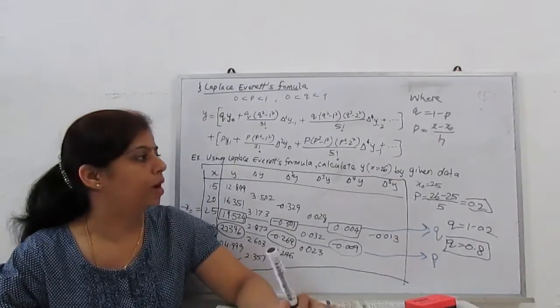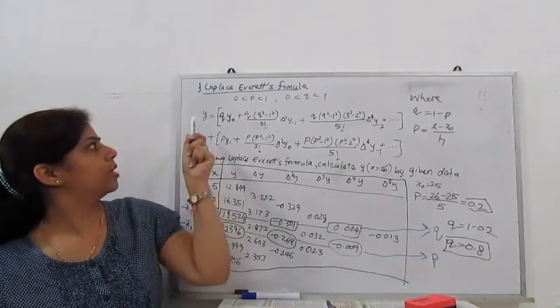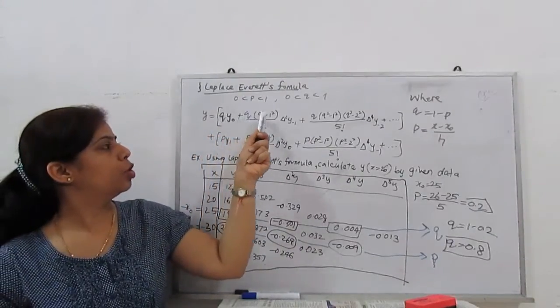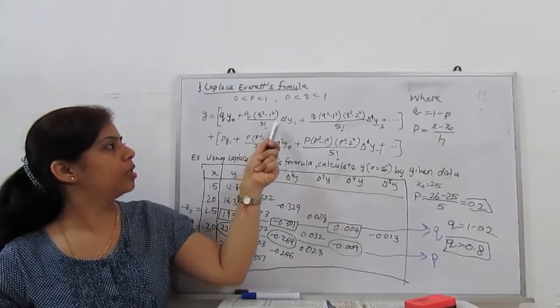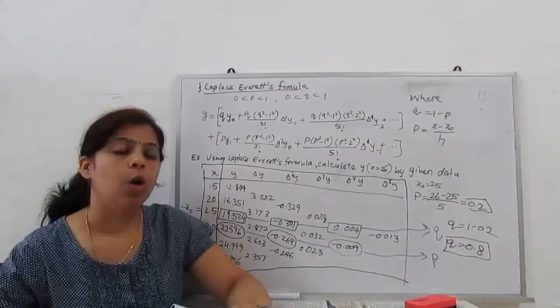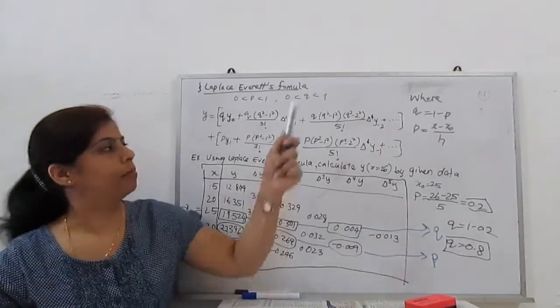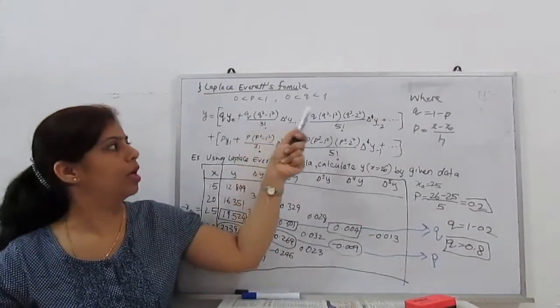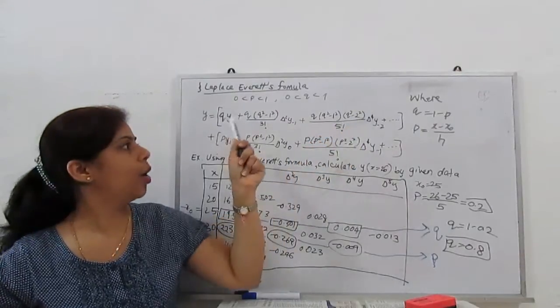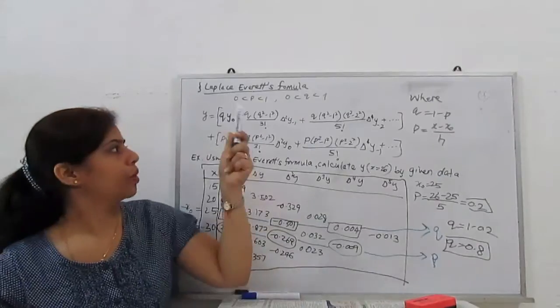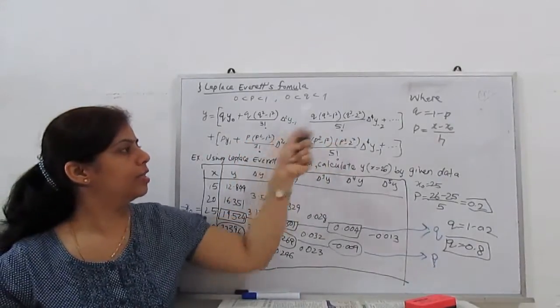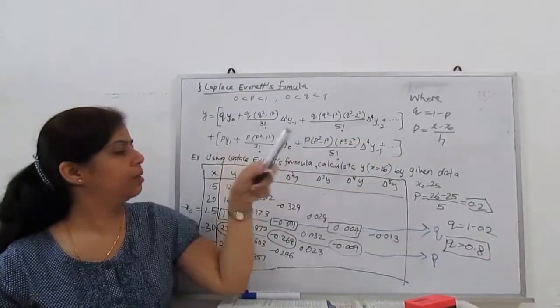P plus Q is always 1. So our formula is given by Y equal to Q Y0 plus Q(Q² - 1²) by factorial 3, del² Y₋₁, and there is always going on in the squaring term. Q is only individual, Q² - 1², Q² - 2², and all the odd factorials: factorial 3, factorial 5.